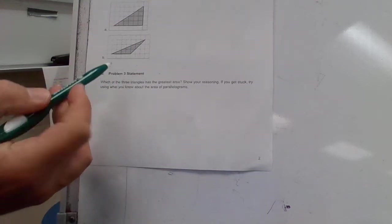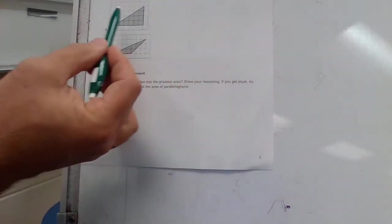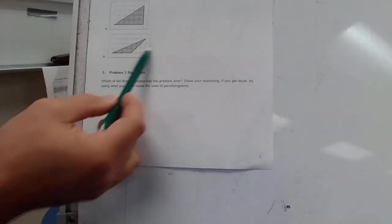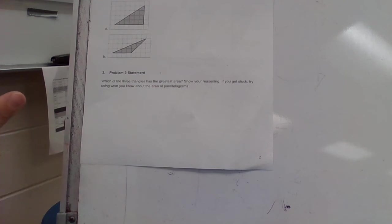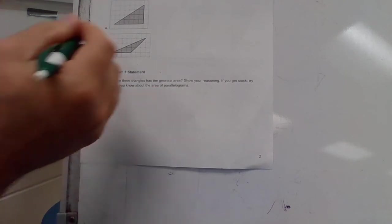Problem number two: Find the area of the triangle. Explain or show your reasoning. We've had this multiple times doing these. There are multiple ways to try to find out the area. Explain how you're doing it or clearly, clearly, clearly show how you've done it.